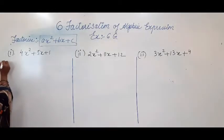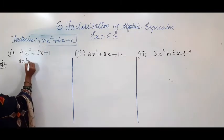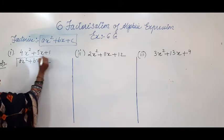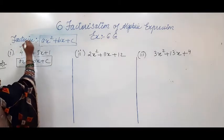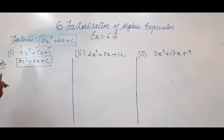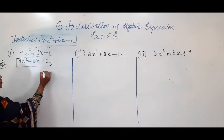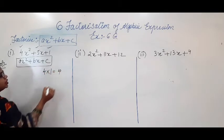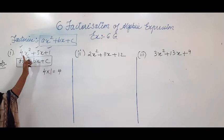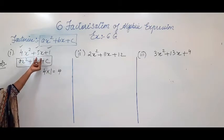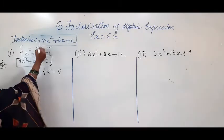The first question is 4x² + 5x + 1. This is given in the form of ax² + bx + c. In such types of questions, what you have to do: this is the first term, middle term, and the last term. First, multiply the first term and the last term. So what is the first term? 4 into 1, that is equal to 4.